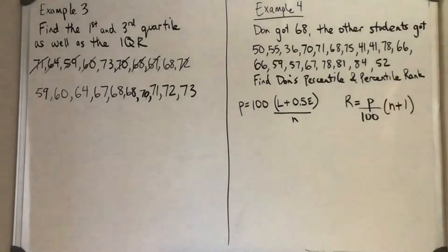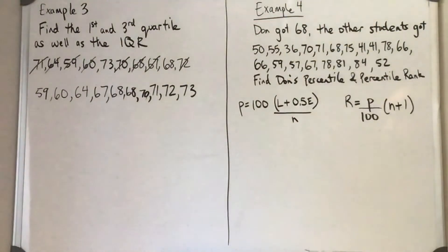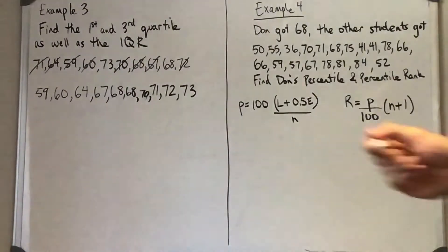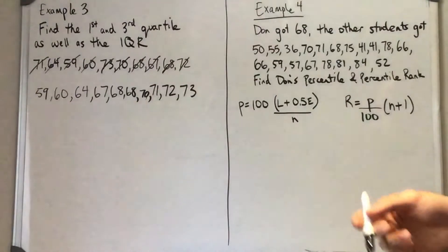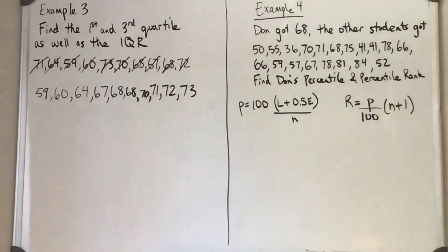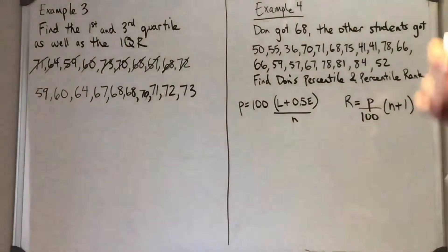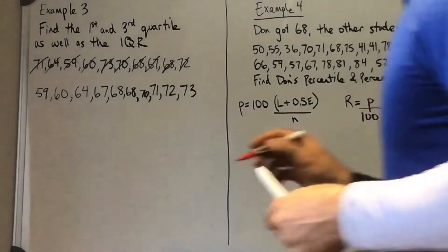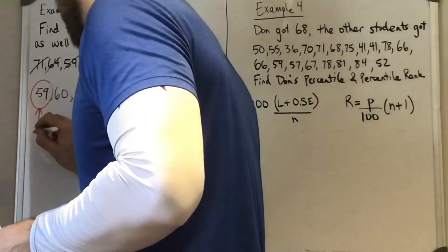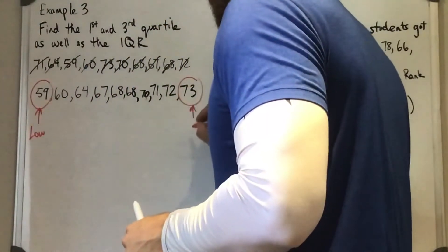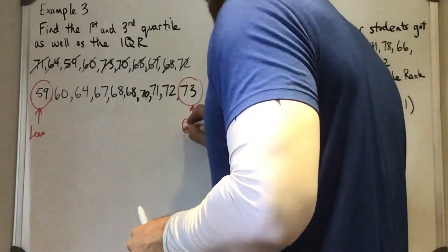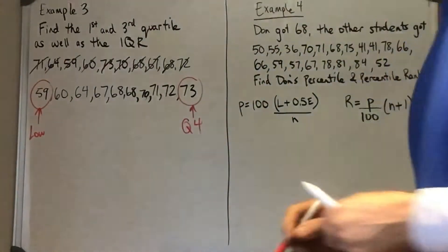Alright, so we're going to go through a couple examples from today's lesson. Example 3: find the first and third quartile as well as IQR. I went ahead and listed them in order one by one, because that's what we're going to need to find our different quartiles. So our value of 59 is our low value, and our value of 73 is our fourth quartile.